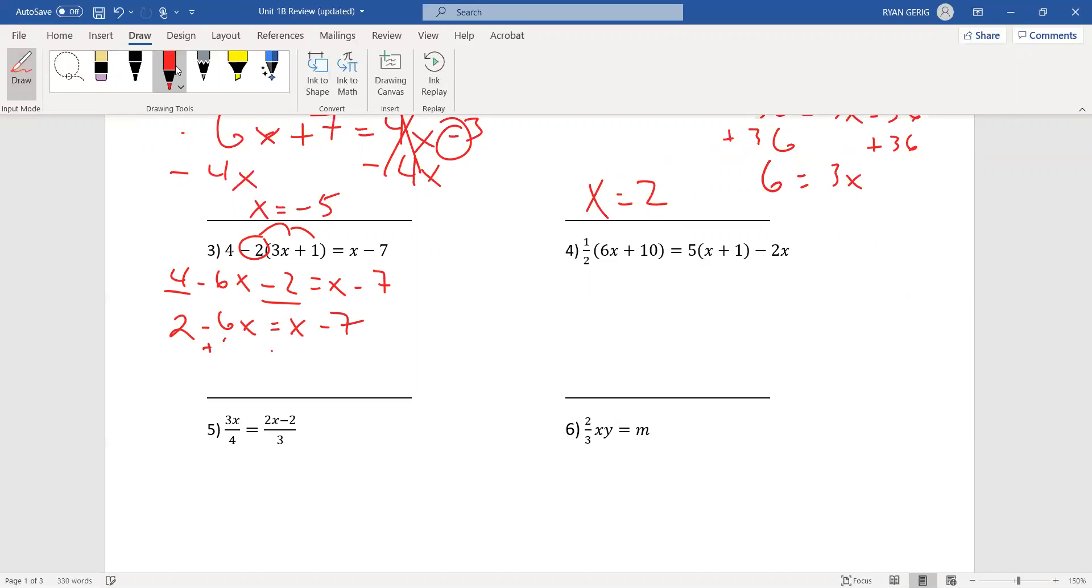I'm going to add 6x to both sides. Add 7 to both sides. I get 9 equals 7x. Divide by 7. 9 divided by 7 is not a good number. Does not reduce. So, I'm just going to leave it as 9 over 7. I guess I should probably circle my answers here to make them stand out.